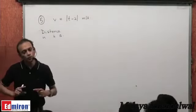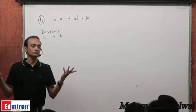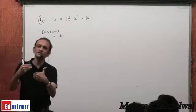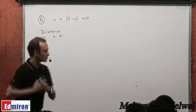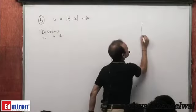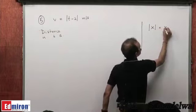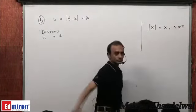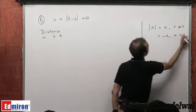If the direction of motion does not change, then distance and displacement will be the same. Now, for the modulus function: |x| = x when x ≥ 0, and |x| = −x when x < 0.